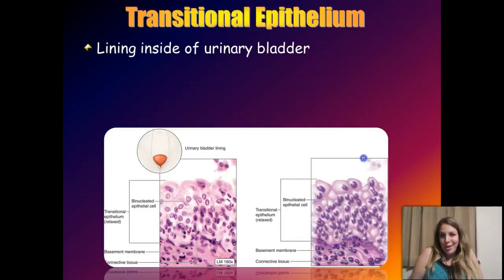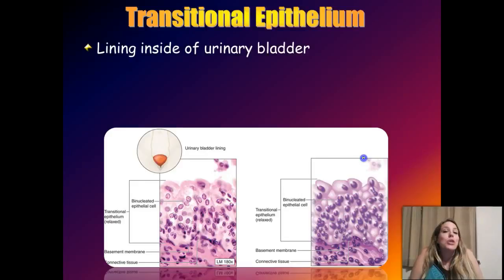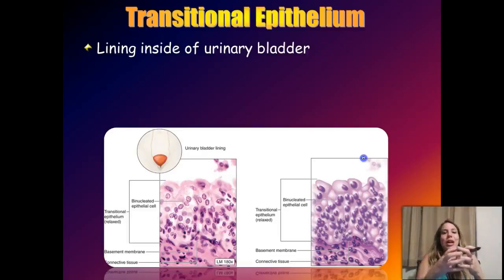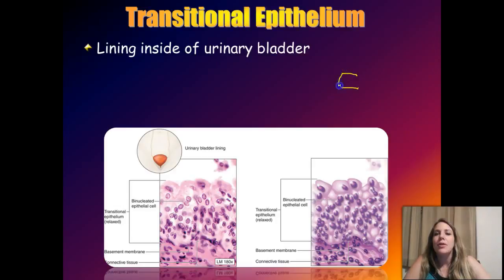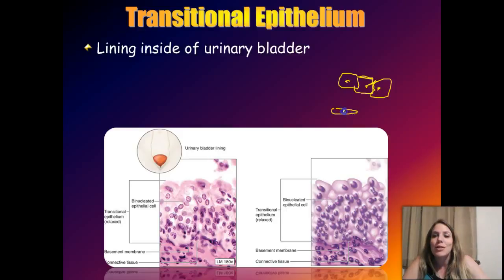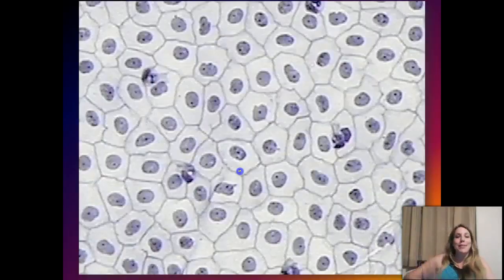One more type that doesn't fit neatly into those categories is transitional epithelium, found in the urinary tract like your bladder — places where you need to stretch. As your bladder fills with urine it stretches, and the epithelial cells themselves stretch. When the bladder is empty, the epithelial layer appears cuboidal. When the bladder is full and stretched out, it becomes a layer of simple squamous epithelium.